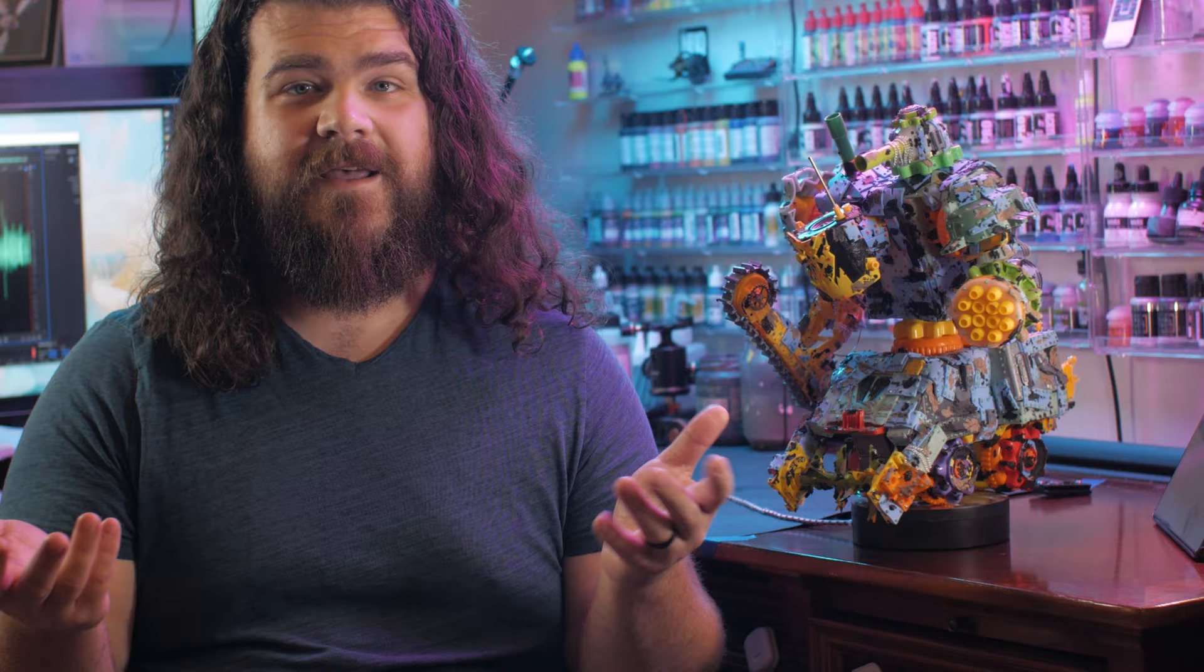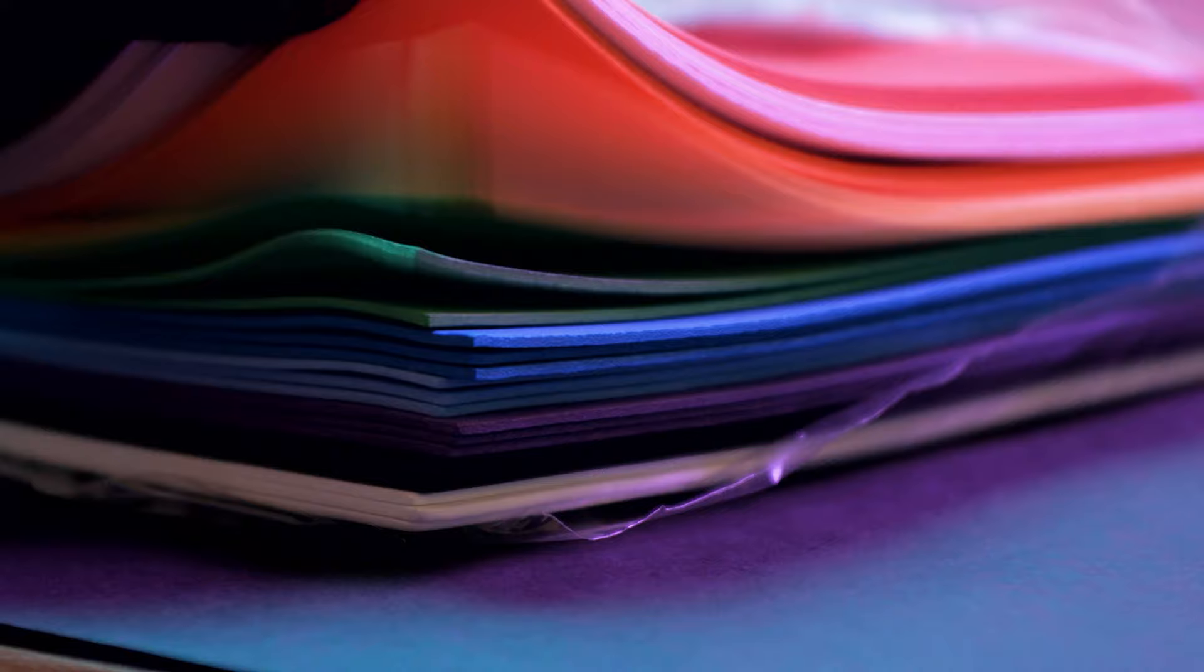First though, let's start on the face, and bulk out the head. To do so, I'm going to use some EVA foam, which is kind of like construction paper, except it's foam.